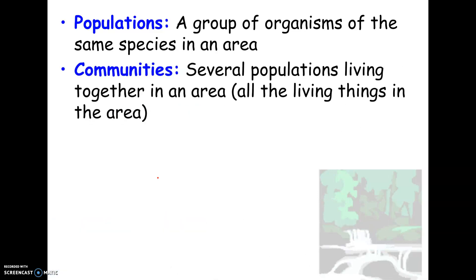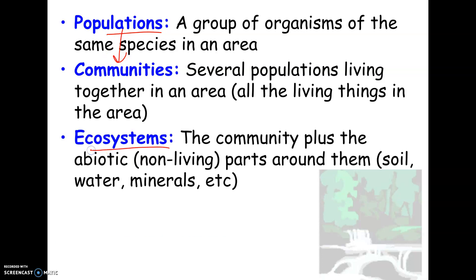A community is several populations — pretty much all the living things in an area. The pond community would include the fish, bacteria, trees, plants, ducks, and anything else living in that area — all those populations combined. The ecosystem is basically the community plus the non-living things, called abiotic factors — 'a' meaning without, 'biotic' meaning alive. So the pond ecosystem includes the community plus the soil, water, and minerals — all the non-living things contributing.